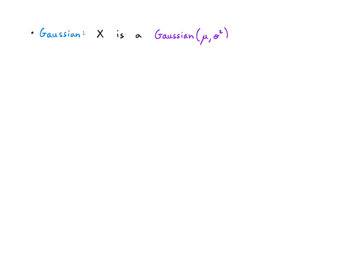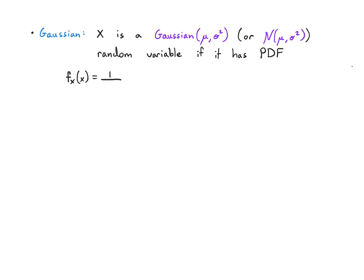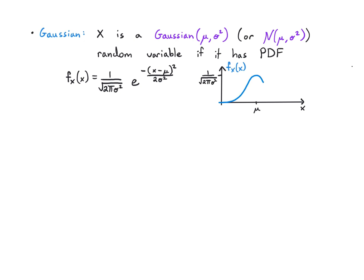The last one we'll introduce, and by far the most important, is the Gaussian. X is Gaussian(μ, σ²) — sometimes written as N(μ, σ²) — if it has the following PDF. The PDF has a normalizing constant out front, and then it's e^(−(x−μ)² / (2σ²)). It basically looks like a hill centered at μ, and you can think of σ as the width of this hill. It has infinite width going from −∞ to +∞, but the bulk of the distribution has width roughly σ.